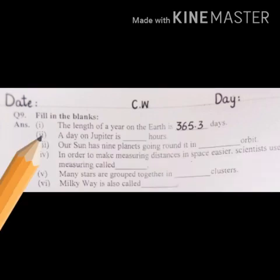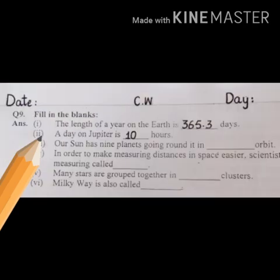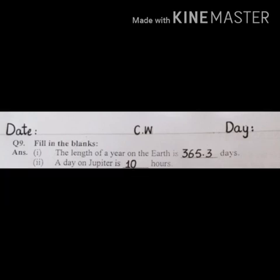Number 2. A day on Jupiter is dash hours. Jupiter per aeg din dash hour ka hai. A day on Jupiter is 10 hours. Jupiter per aeg din 10 ghantay ka hai.